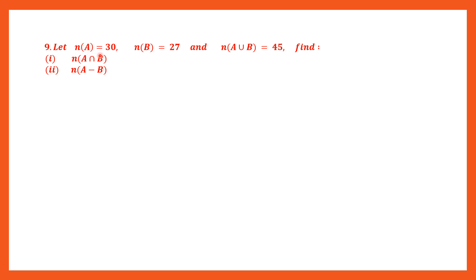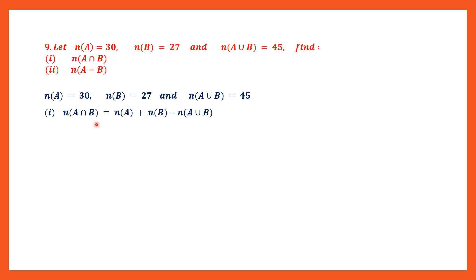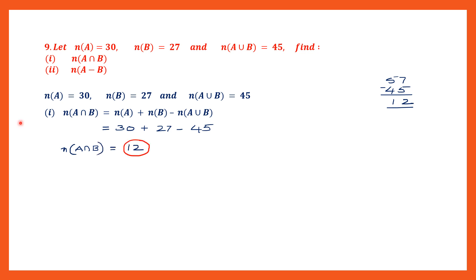Question 9: Let the cardinal number of A be 30, cardinal number of B be 27, and the cardinal number of A union B be 45. We have to find two answers. First, the cardinal number of A intersection B. Using the formula: cardinal number of A plus cardinal number of B minus cardinal number of A union B. Substituting: 30 plus 27 is 57, minus 45. 7 minus 5 is 2, 5 minus 4 is 1 — that is 12. We have found the cardinal number of A intersection B, and that is 12.